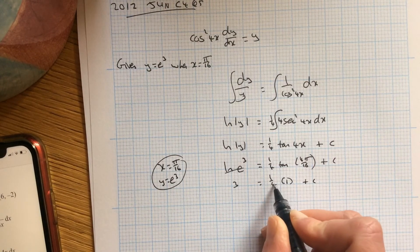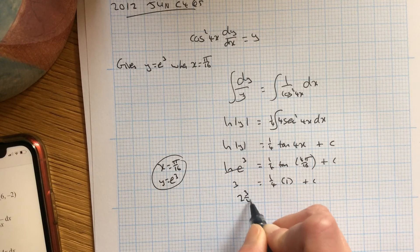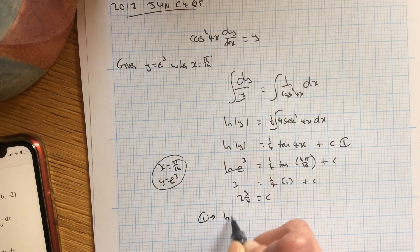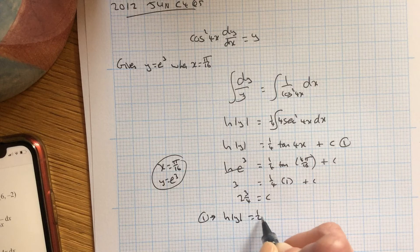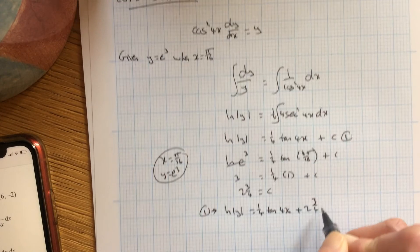So that's a quarter. 3, bring that over cross, equals take away. 3 take away a quarter is 2 and 3 quarters. So your equation 1 becomes log y equals a quarter tan 4x plus 2 and 3 quarters.